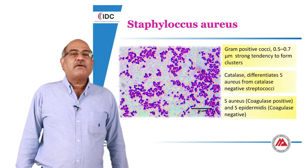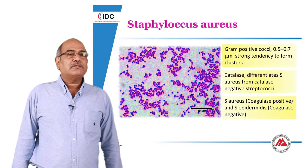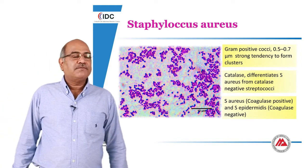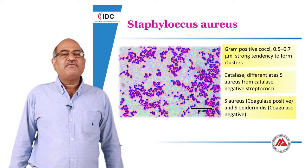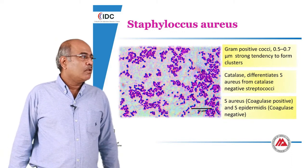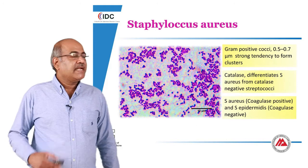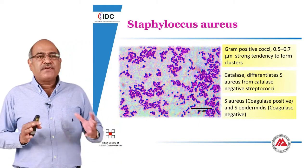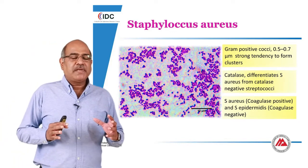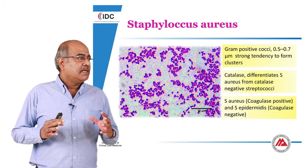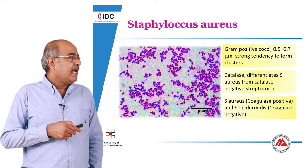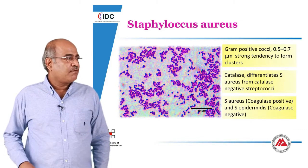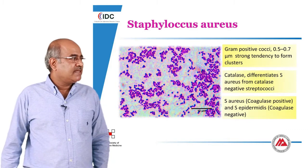We are all aware of what Staphylococcus is. Staphylococcus aureus is usually referred to as a gram positive cocci, about 0.5 to 0.7 micromillimeters, with a strong tendency to form clusters as in a grape. You differentiate between Streptococci and Staph aureus by looking at the catalase, which differentiates Staph aureus from the catalase negative Streptococci.